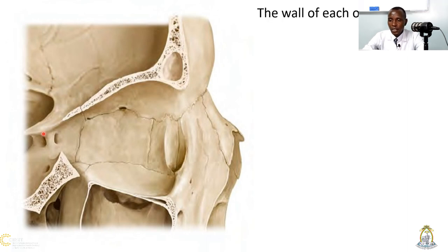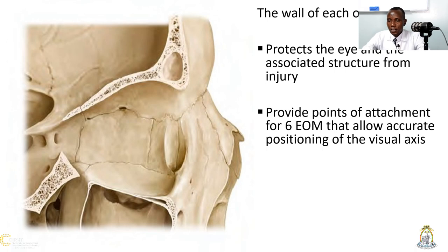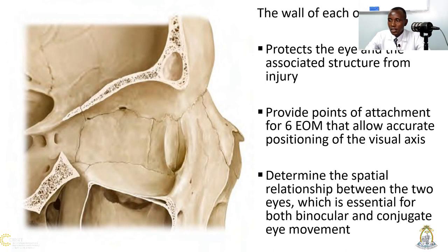The wall of the orbit is very important as it protects the eye and associated structures from injury. It will provide points of attachment for six extraocular muscles that allow accurate positioning of the visual axis, and determines the spatial relationship between the two eyes, which is essential for both binocular and conjugate eye movements.